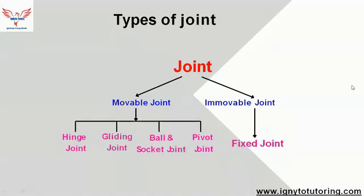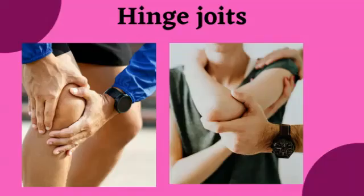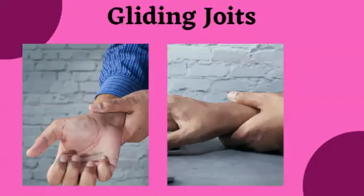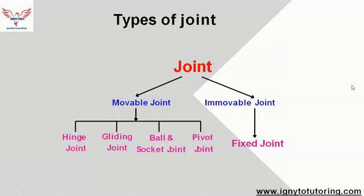There are mainly two types of joints: movable and immovable. The movable joints are further classified into four types — hinge joint, gliding joint, ball and socket joint, and pivot joint. Immovable joints have only one type, which is the fixed joint.